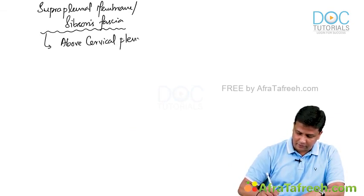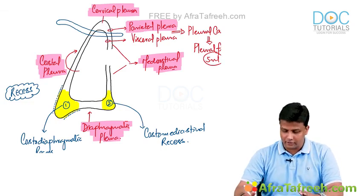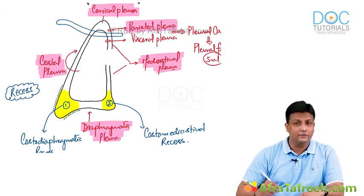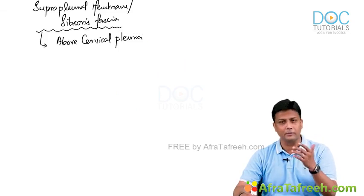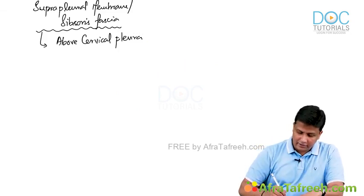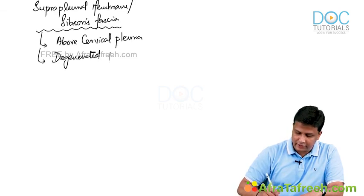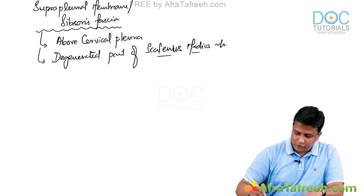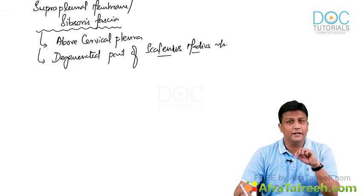The suprapleral membrane is above the cervical pleura — recall that the parietal pleura has four parts including the cervical pleura in the root of the neck. An important MCQ point: what exactly does the suprapleral membrane or Sibson's fascia represent? It represents the degenerated part of the scalenus medius muscle. This has already been asked in exams.